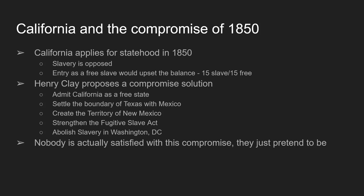Henry Clay proposes the Compromise of 1850. In it, Clay suggests California come in as a free state, slavery be taken away from Washington DC, but the Fugitive Slave Law would be enforced and strengthened to allow slave traders and bounty men to return any runaway slave without questions. To settle matters with Mexico, Mexico would receive compensation for land it lost, and New Mexico would choose slavery or freedom based on popular sovereignty. There are a lot of different working options within this compromise.